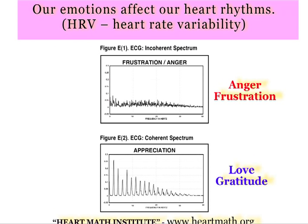Now we're going to move on to some results found by the HeartMath Institute in California, where they measured the effect of emotions on heart rate variability. We see that when there is frustration or anger, the movement of the heart rate is quite chaotic, and when we are feeling love or gratitude, we can see a rhythmic, harmonious effect on the heart. You can learn more about the HeartMath Institute at www.heartmath.org.